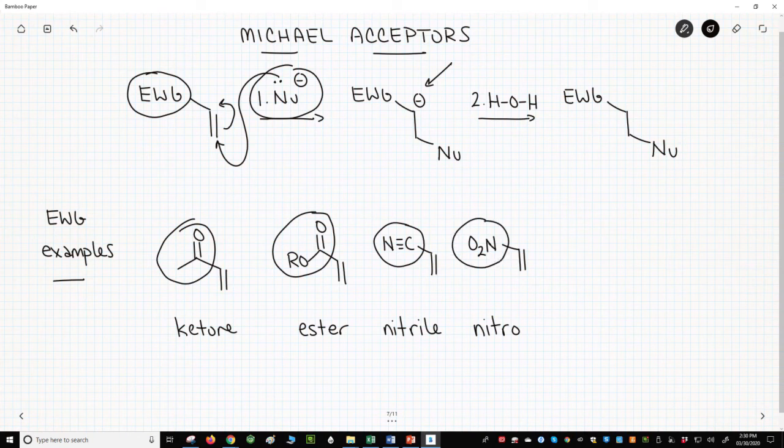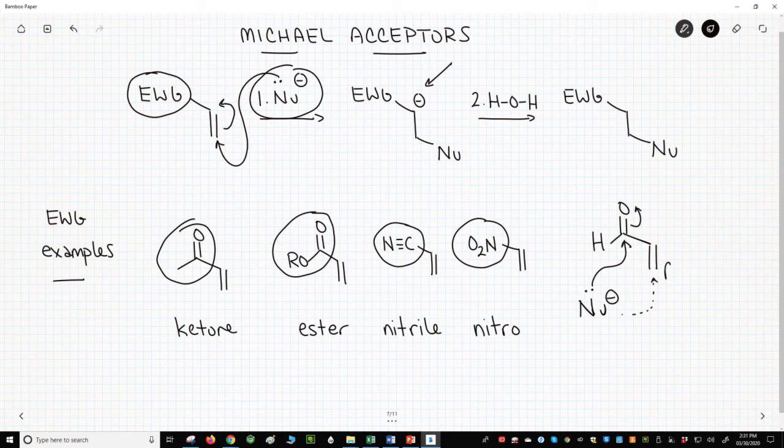One group I want to specifically exclude is the aldehyde. I'll draw an example in the bottom right corner. The reason aldehydes are not good is that they are so electrophilic. If you reacted a nucleophile with this molecule in the lower right, it would be attacked at the aldehyde carbon, doing a 1,2-addition instead of attacking at the beta carbon.